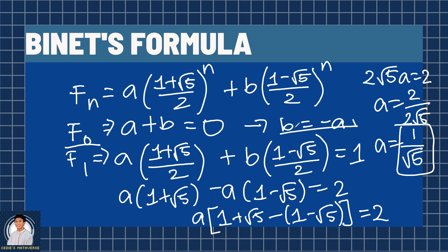Now, we know that b equals negative a. So all we have to do is make the additive inverse negative 1 over square root of 5. And now we have a and b. And we can now say that f sub n equals 1 over square root of 5 times quantity 1 plus square root of 5 all over 2 raised to the nth power minus 1 over square root of 5 multiplied by 1 minus square root of 5 all over 2 raised to the nth power.